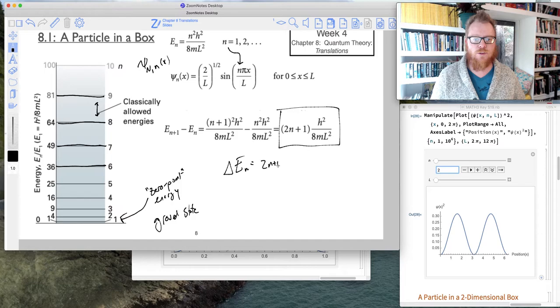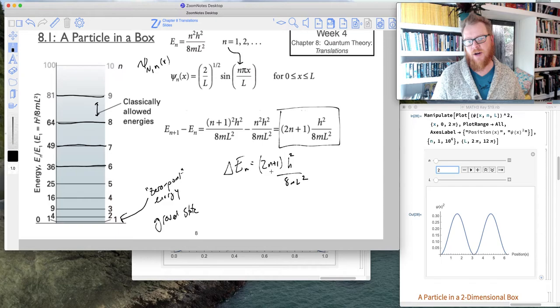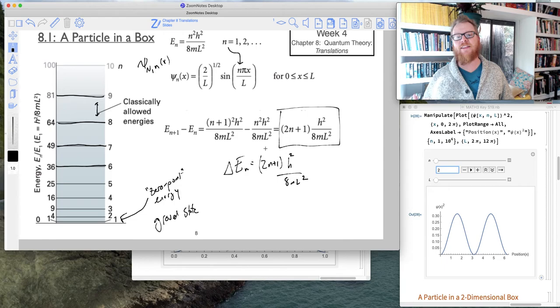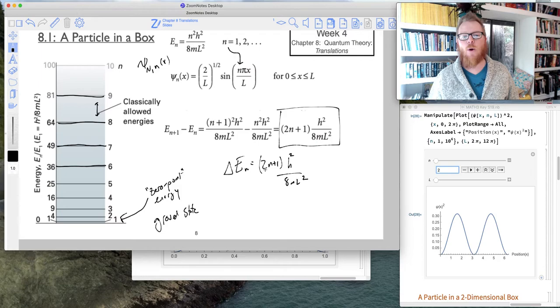And so this quantity 2n plus 1 is going to come up later on as well. But this is allowing us to establish an easy way to calculate the difference between energy levels. So here, I'll write delta E_n equals 2n plus 1 times h squared over 8mL squared. So what happens as n goes to huge, huge quantum numbers? Well, we established classically if n goes to humongous quantum numbers, this is approaching that of a classical system.